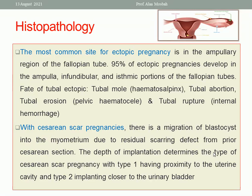The most common site is the ampullary region of the fallopian tube. The fate of tubal ectopic may be: tubal mole, where the ectopic separates from the wall and is surrounded by blood, leading to hematosalpinx; tubal abortion, where the fertilized ovum is expelled through the fimbrial end; tubal erosion causing pelvic hematocele; or tubal rupture causing internal hemorrhage, which may be severe enough to cause shock and a life-threatening condition.